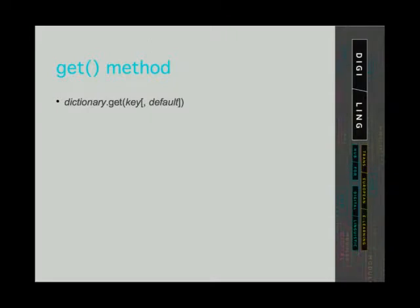To avoid getting errors for keys not found in dictionaries, we can call the method get on a dictionary. You can see the syntax of the method on the slide. We state the dictionary on which we are calling the method, then period, then get and brackets.